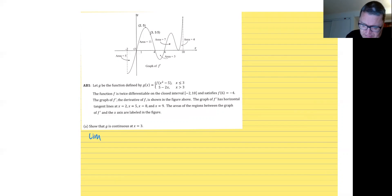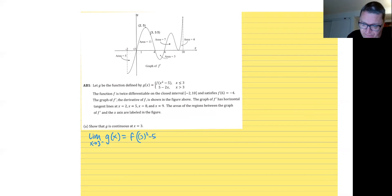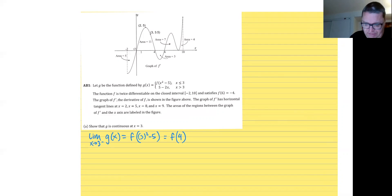The limit as x approaches 3 from the left of g of x means we go to the first piece of the piecewise function. Direct substitution is what we should always try first. We're going to do f of 3-squared minus 5, which is f of 9 minus 5, which is f of 4. Because we're given f of 6 and we have the graph of f prime, we can set up an integral to find the value of f of 4.